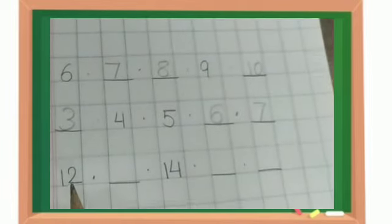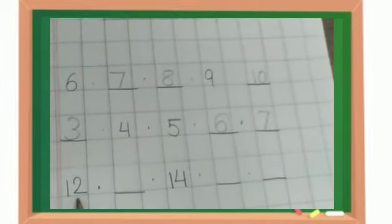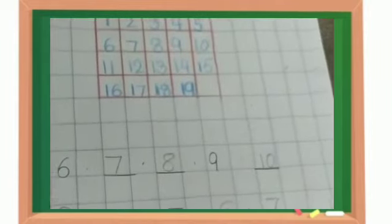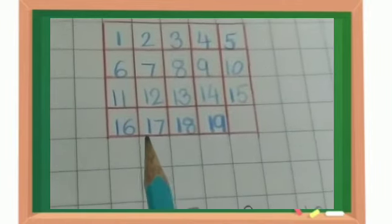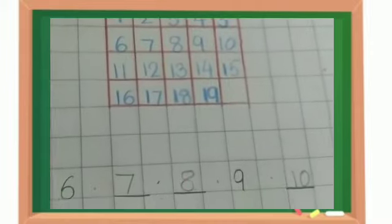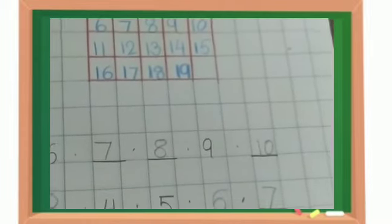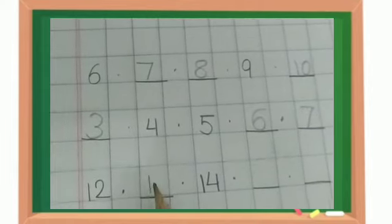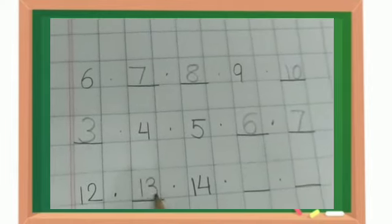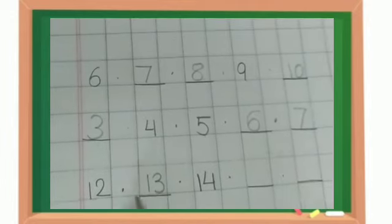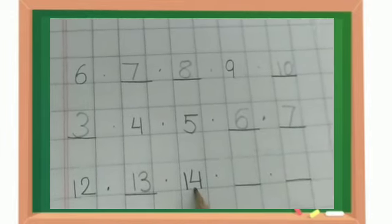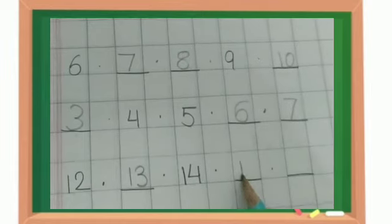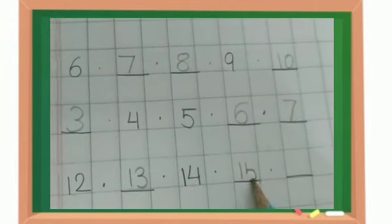Now, let us see the next number. 12. So where can you see 12? Yes. Next to 12 is which number? Yes. After 12 comes 13. So 12, 13, 14, then comes 15.